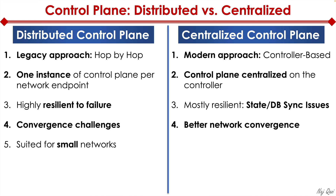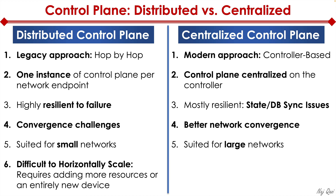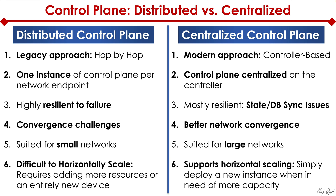Distributed control plane works fine in small environments, whereas centralized control plane typically works better in large environments. Distributed control plane is difficult to horizontally scale because as you add more devices, your control plane gets bigger and you're going to need more memory and more CPU. At some point you'll run out of those resources and have to add an entirely new device. The centralized control plane, by contrast, is designed with horizontal scalability in mind — you simply deploy a new instance when you need more capacity.